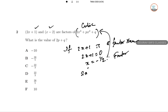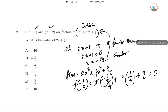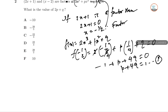The cubic is 2X cubed plus PX squared plus QX plus some constant. Evaluating F(minus 1/2): 2 times (minus 1/2) cubed gives minus 1/4, plus P times (1/4), plus Q times (minus 1/2). Multiplying everything by 4: minus 1 plus P minus 2Q... wait, that gives P plus 4Q equal to 1. This is our first equation.